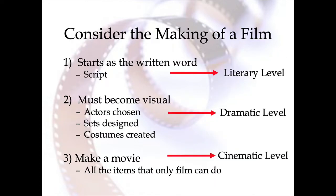Before we go into detail, consider the making of a film, and you can see why we choose this analytical structure. When films are made, they probably start with the written word — a script. The script is going to have all the things similar to literature: plot, characters, setting, and the whole point is that it teaches a theme or a lesson. That is the literary level of film.